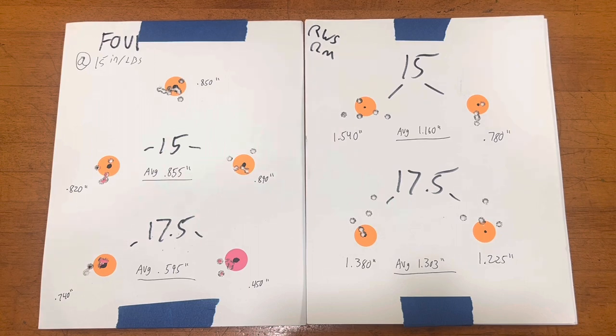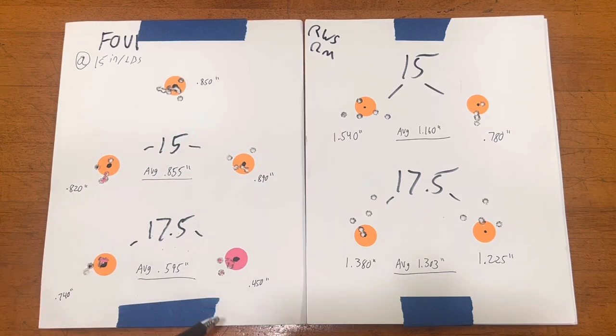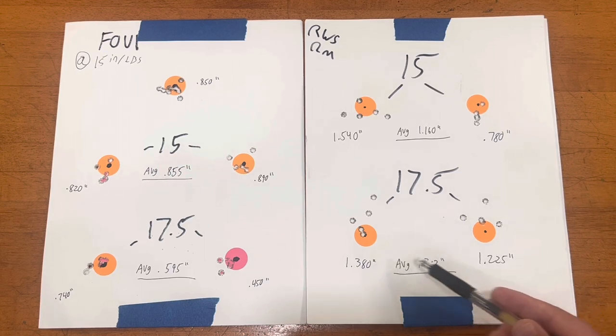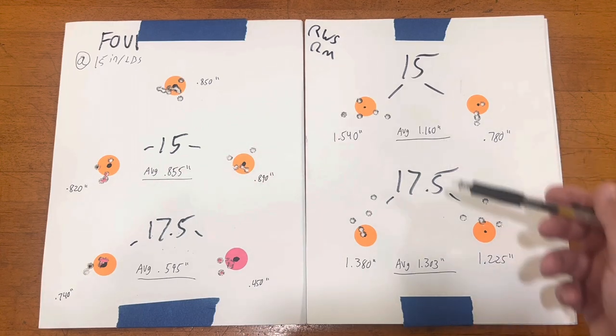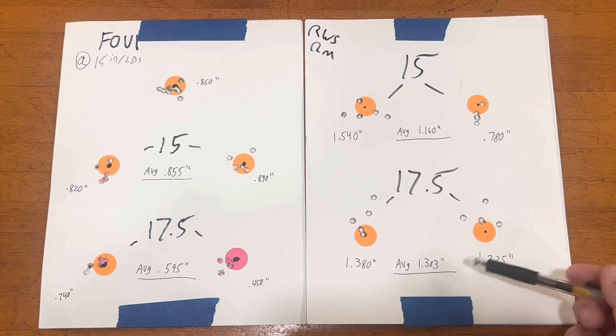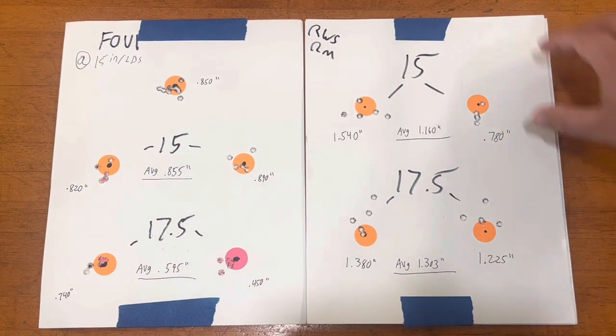Moving down to the 17.5 inch-pound groupings, we shot a group in the sevens and a group in the fours, so we had a sub half-inch group there with the Hogue overmold. Moving over to the KRG Bravo, we shot two groups over 1.2 inches. This was a little bit disheartening to see, but both of our averages on the KRG have been over an inch at 50 yards, which again wasn't great to see.